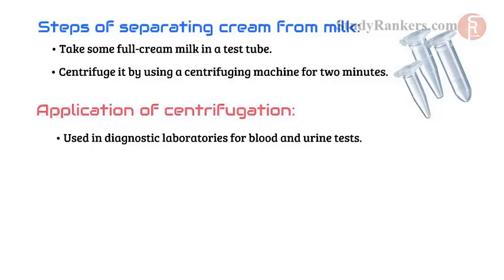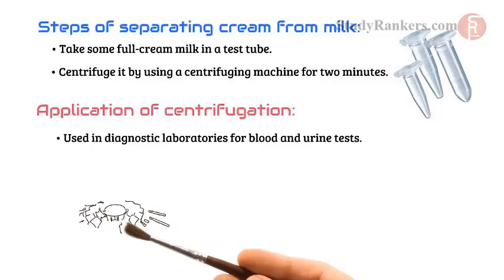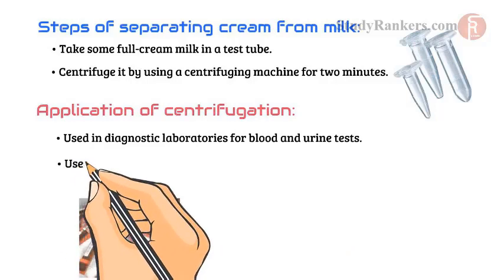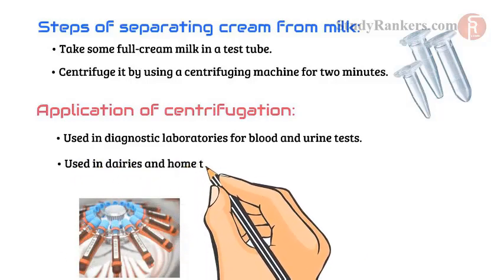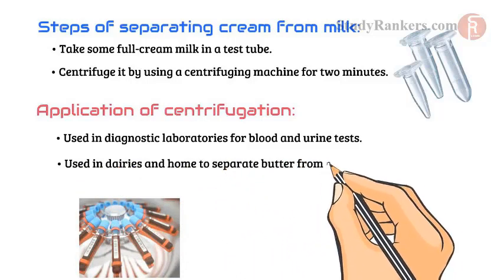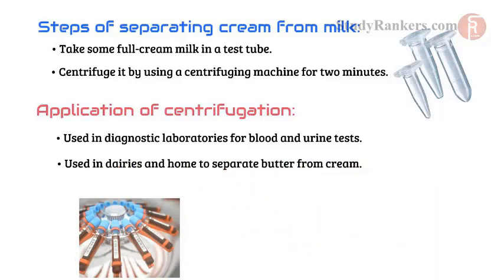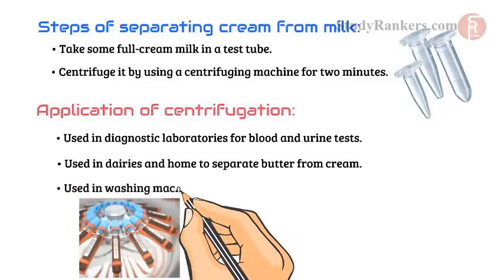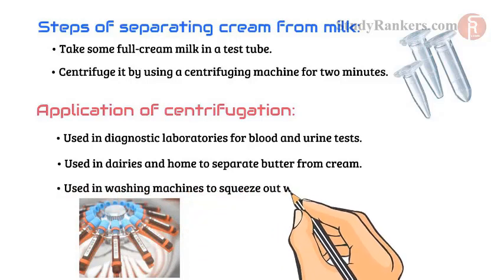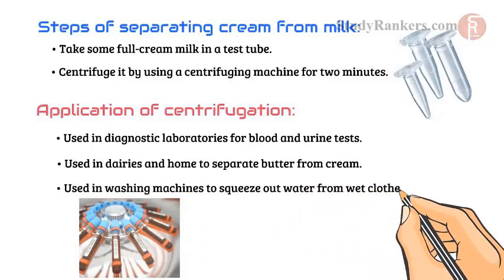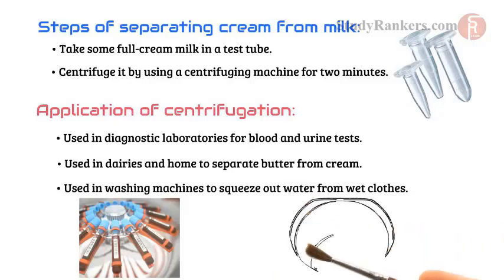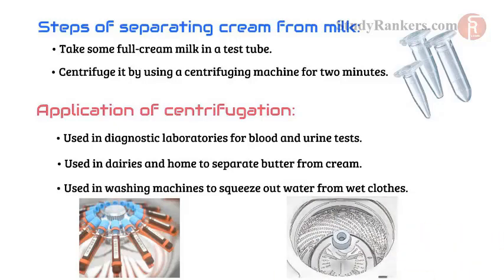Some applications of centrifugation: this process is used in diagnostic laboratories for blood and urine tests. It is also used in dairies and homes to separate butter from cream. In addition, in washing machines, it is used to squeeze out water from wet clothes.